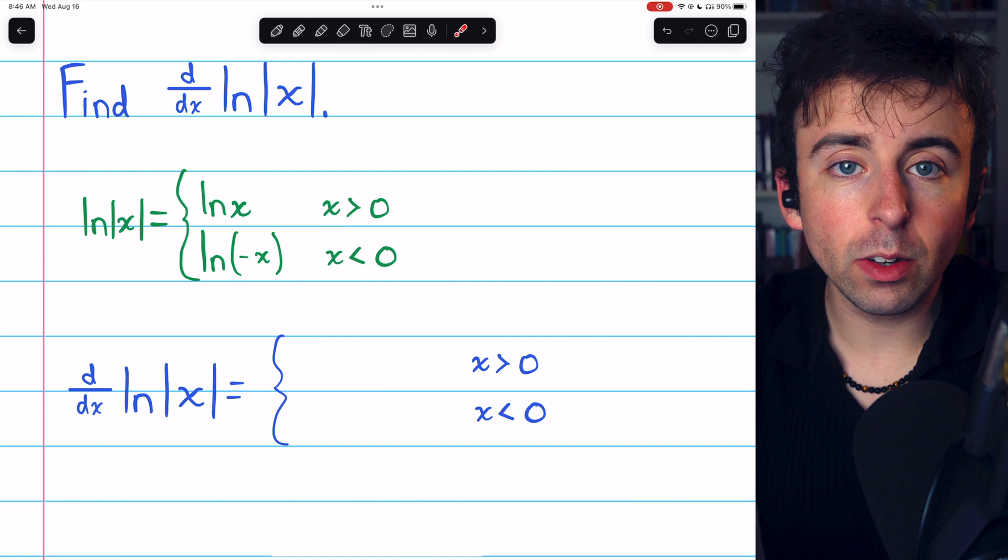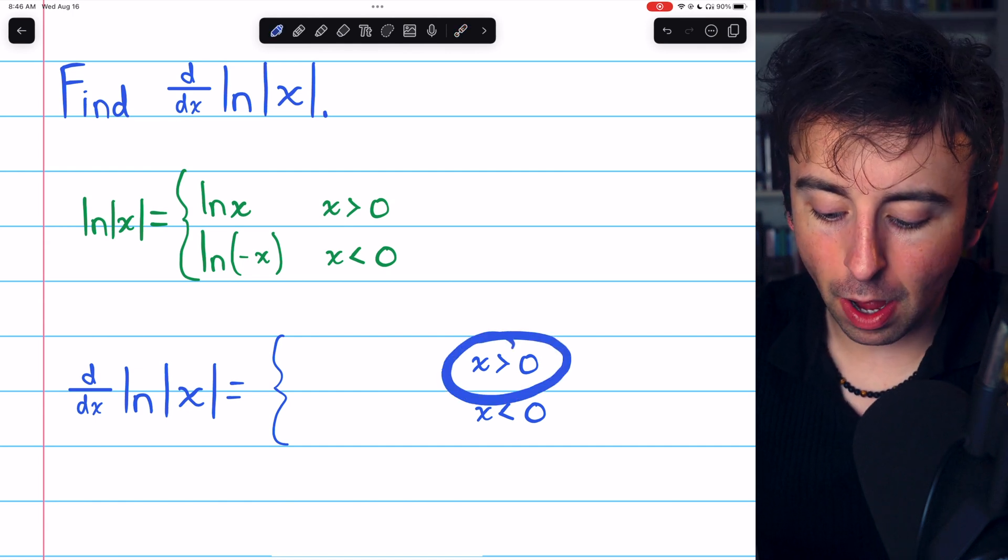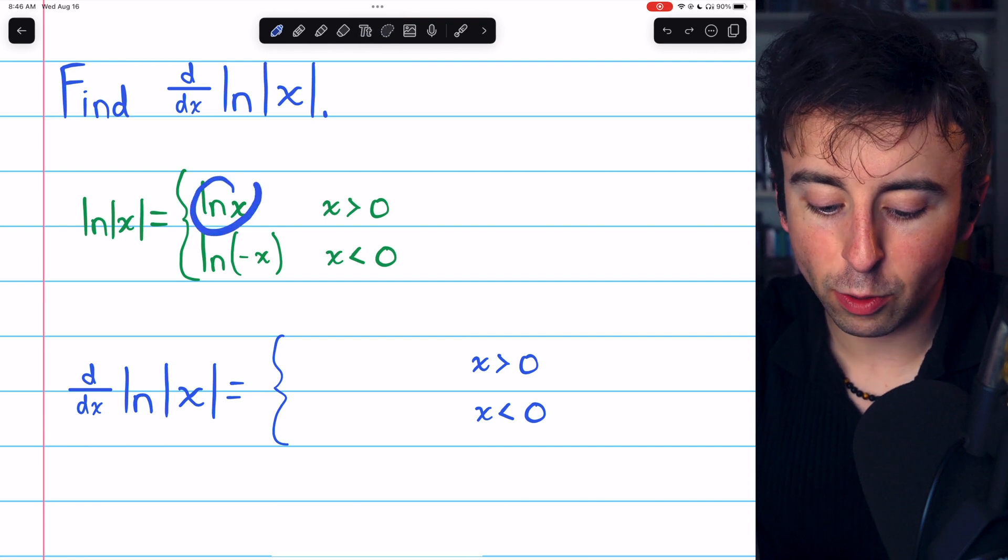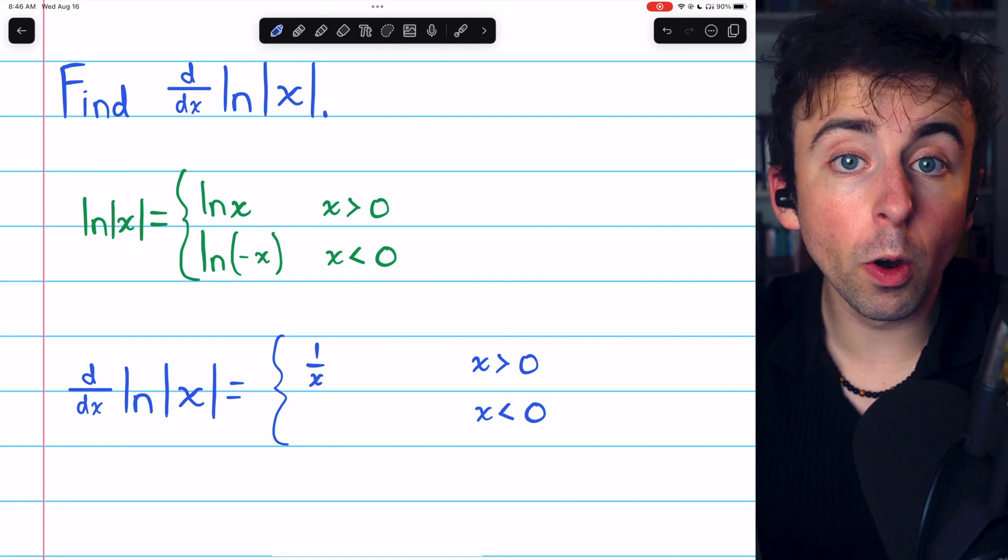With this in mind, we can find its derivative by considering these two pieces of the domain. If x is positive, the function is just natural log of x, and so its derivative is 1 over x.